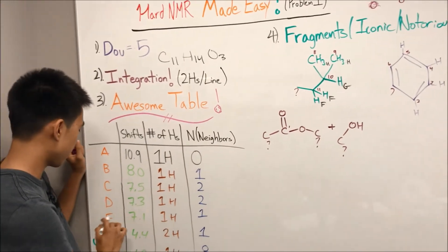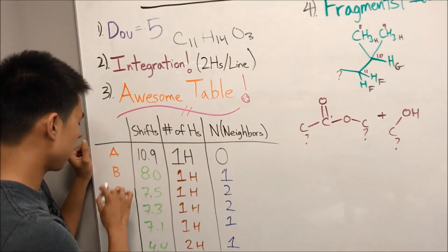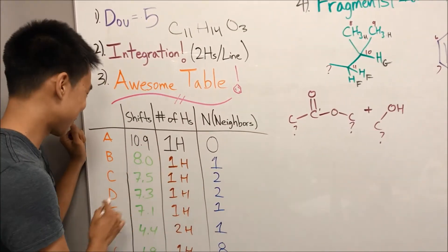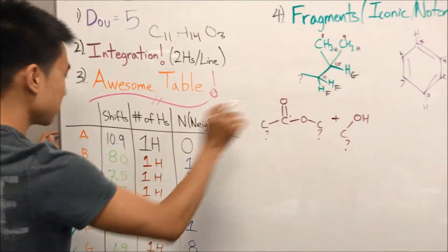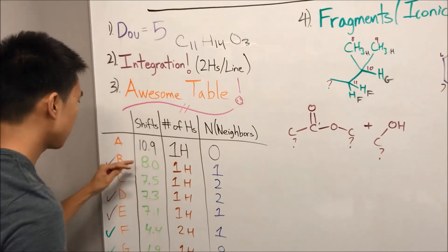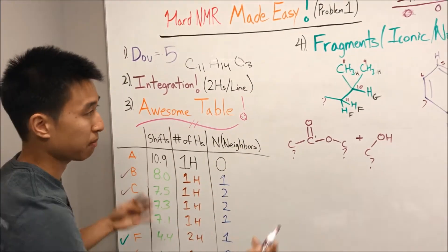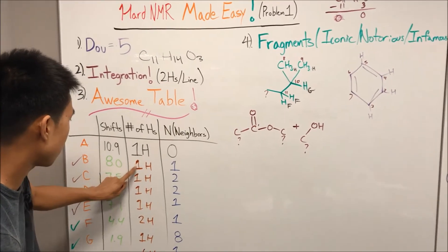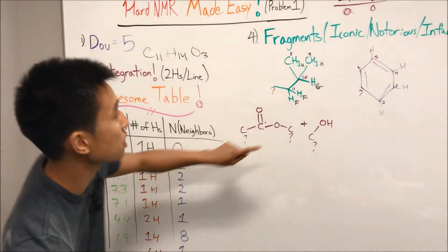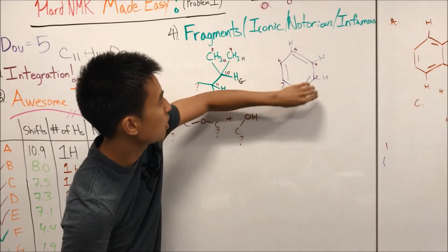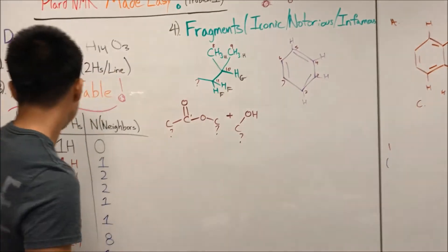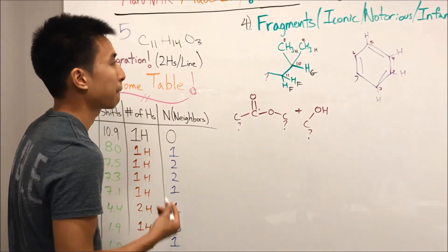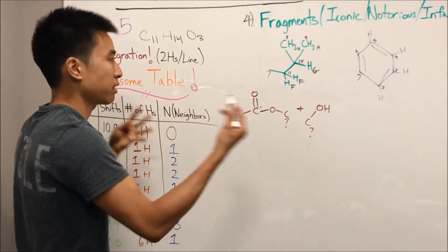Alright, so going back to the awesome table, we just figured out pretty much the four hydrogens on the benzene. So E, D, C, B. We figured them out. We don't really need to label them, but we know that for sure, B and E, the one hydrogens with one neighbors, must be these guys. One hydrogens with one neighbor. And C and D must be one of these guys. One hydrogens with two neighbors. So, yeah. So now we just got to connect everything together.